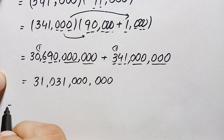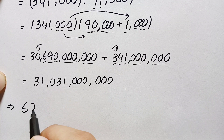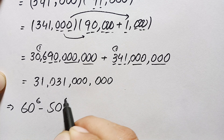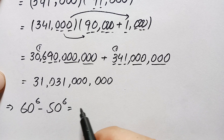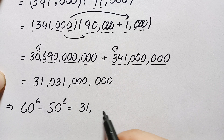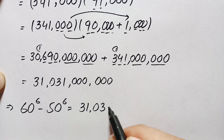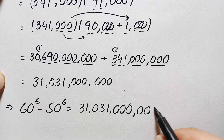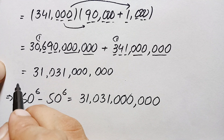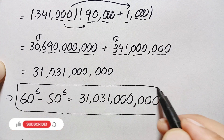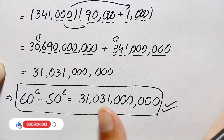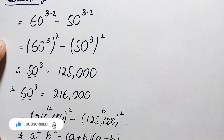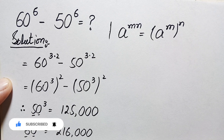So finally the value of 60 raised to power 6 minus 50 raised to power 6, which looks very simple, gives a very big number. The final answer is 31 billion and 31 million. This is our final required answer. Don't forget to subscribe to my channel for more interesting step-by-step math problems. Thanks for watching.